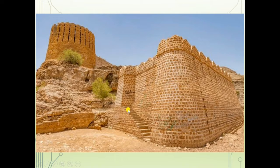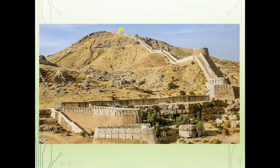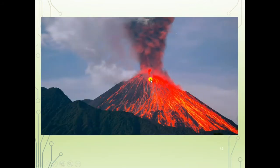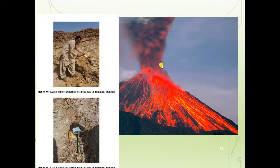This is another view of the Ranikot Fort area. This slide shows the great wall of Ranikot — the great wall of Sindh. There are four stratigraphic units in the Ranikot Fort area. One of them is the Kherdo Formation. From this formation, we have collected 28 rock samples. The Kherdo Formation was brought out from the Hyderabad-Deccan region due to volcanic eruptions.